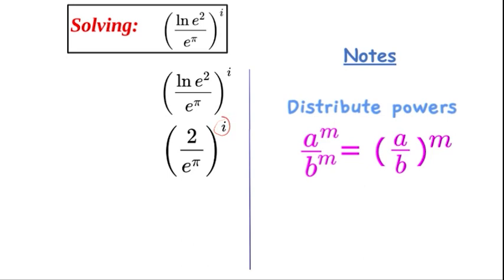So now we have 2 to the power of i as numerator and e to the power of i π as the denominator.